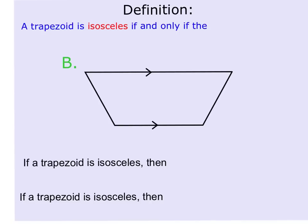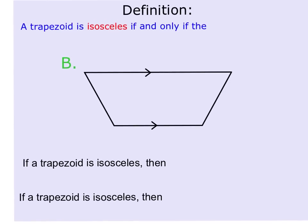A trapezoid can also be isosceles. A trapezoid is isosceles if and only if the legs are congruent. It's very important to understand in this picture which ones are the legs.